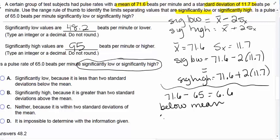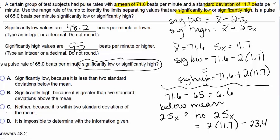Is it two standard deviations below? No, because two standard deviations would be two times 11.7, which would be 23.4. So this is C.